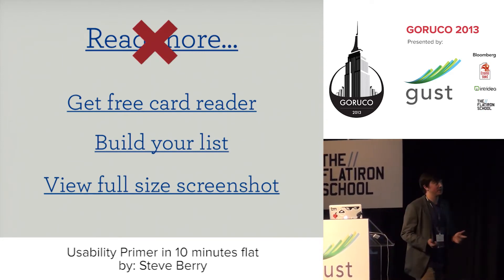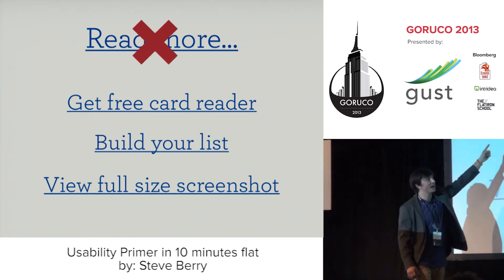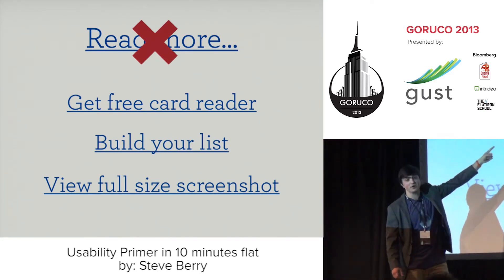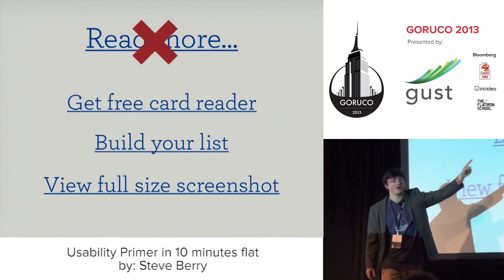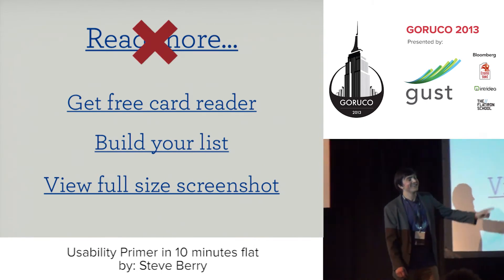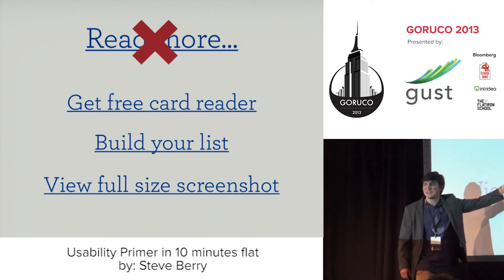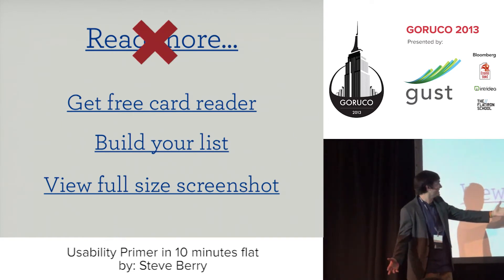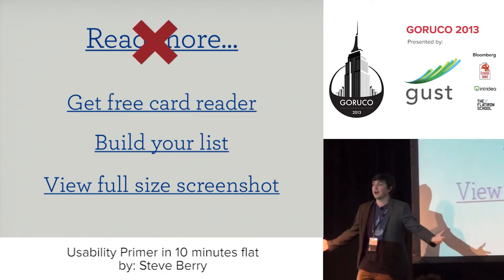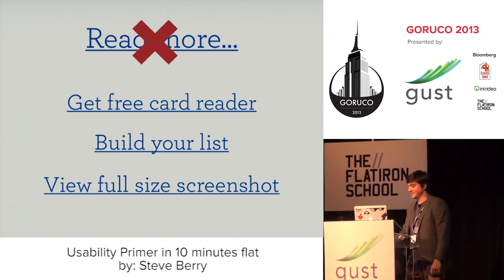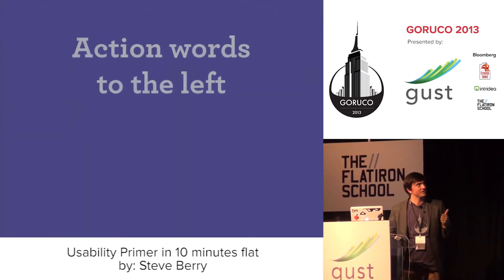Here are some great examples. Square does a great job: 'Get free card reader' — action word first, free card reader. I know what a card reader is; if I click on that, I'm sure as hell getting a free card reader. 'Build your list' — if I click on this, I'm going to be building the list. 'View full-size screenshot' — I'm probably going to see a full-size screenshot. Yes, that's awesome.